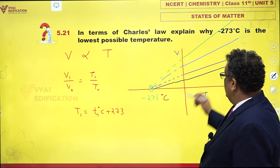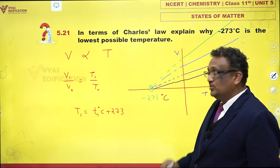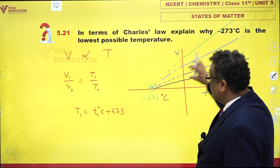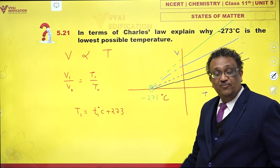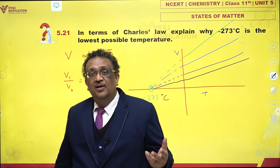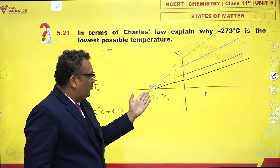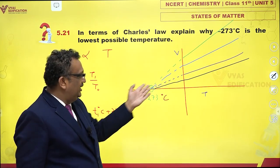Since at minus 273 degrees Celsius, all these lines converge, and if you just want to go below this, volume will become negative, and volume cannot become negative. Volume, the lowest volume possible would be 0. You can't get negative volume.